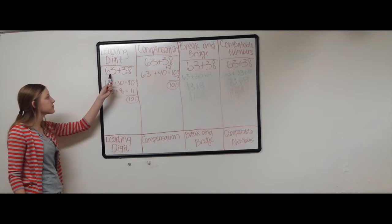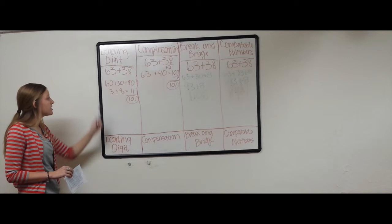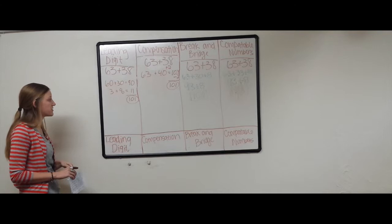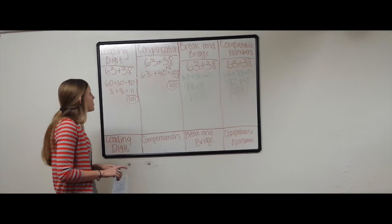Okay, so we'll start with leading digit. The problem was 63 plus 38. So Lauren broke the 63 and 38 into its place values by 60 plus 30. 60 plus 30 is 90. So then she broke apart the 1's place value. 3 plus 8 equals 11. Adding those all together, 90 plus 11 gives you your answer of 101.